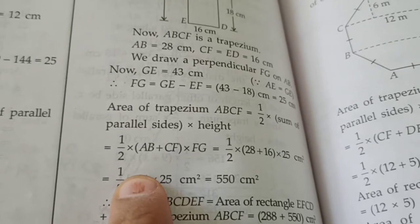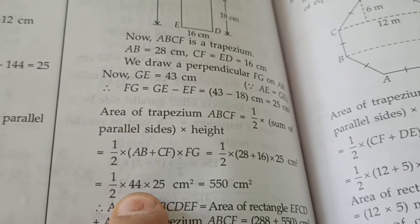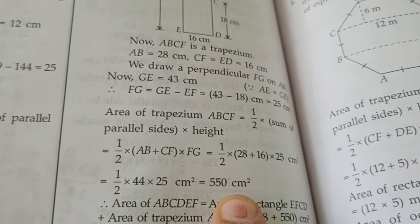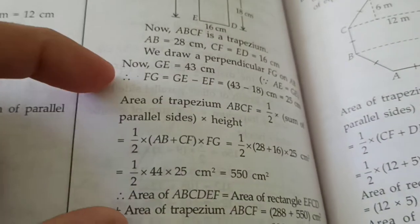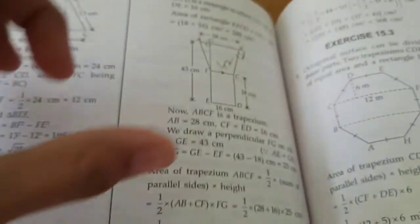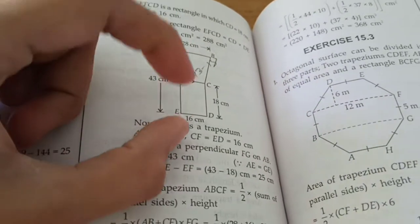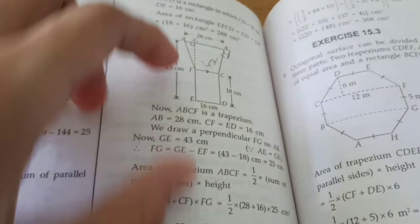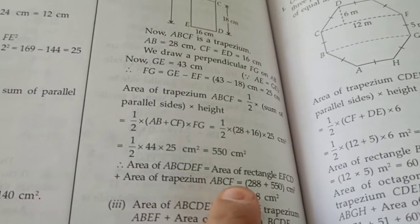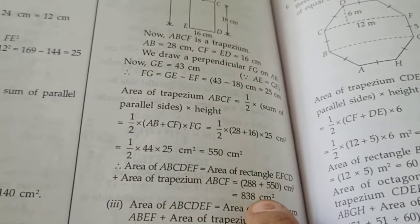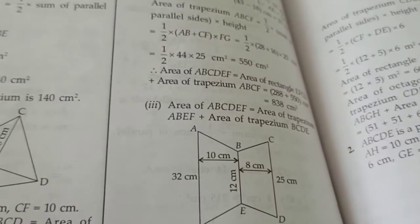So that is we will get 22, 22 multiplied by 25 that is 550 cm square. This is the area of trapezium. So total area will be area of rectangle plus area of trapezium. That is equals to 288 plus 550 is equals to 838 centimeter square.